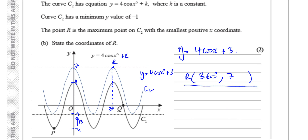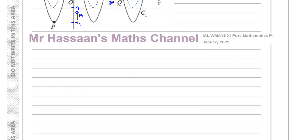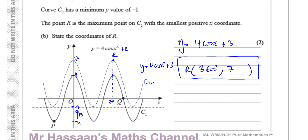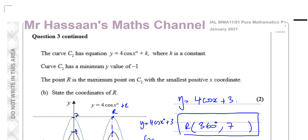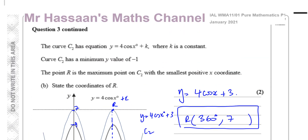So those are the coordinates of R — that's the answer to part B, and that covers question number 3 from the January 2021 P1 paper. Other questions from this paper can be found in the playlist. Other trig graph questions from P1 will appear in this section. You can subscribe by clicking the link. Thank you for watching, see you soon.